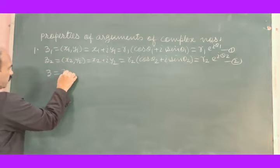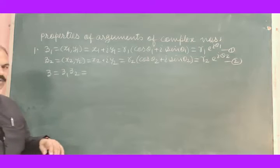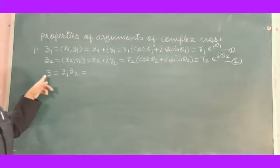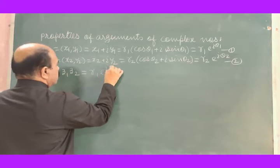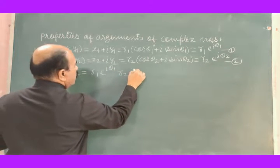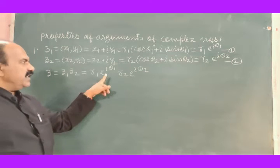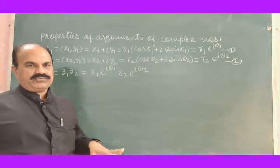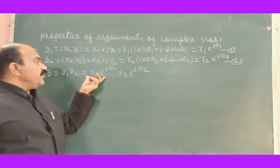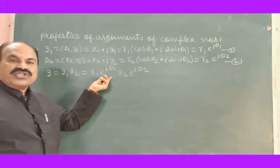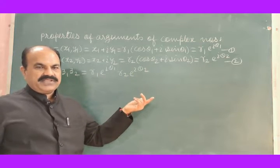Product of complex numbers Z1 and Z2 is a complex number Z. That is R1 e to the power iθ1 into R2 e to the power iθ2. You may alternatively have X1 plus iY1 times X2 plus iY2, or R1 into cos θ1 plus i sine θ1 times cos θ2 plus i sine θ2. The result will come out the same.